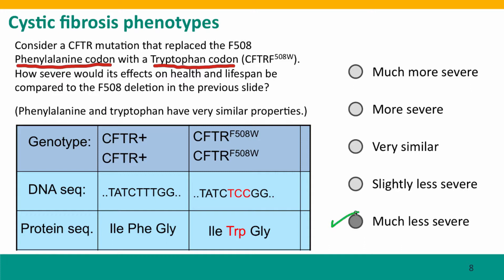We expect that the phenotype effects on health and lifespan will be much less severe. That's because this mutation is producing a protein that still has an amino acid in this position — an amino acid with very similar properties to the normal phenylalanine amino acid. So we would expect this protein to still function quite well as a transmembrane regulator, and so the phenotype would be much less severe.